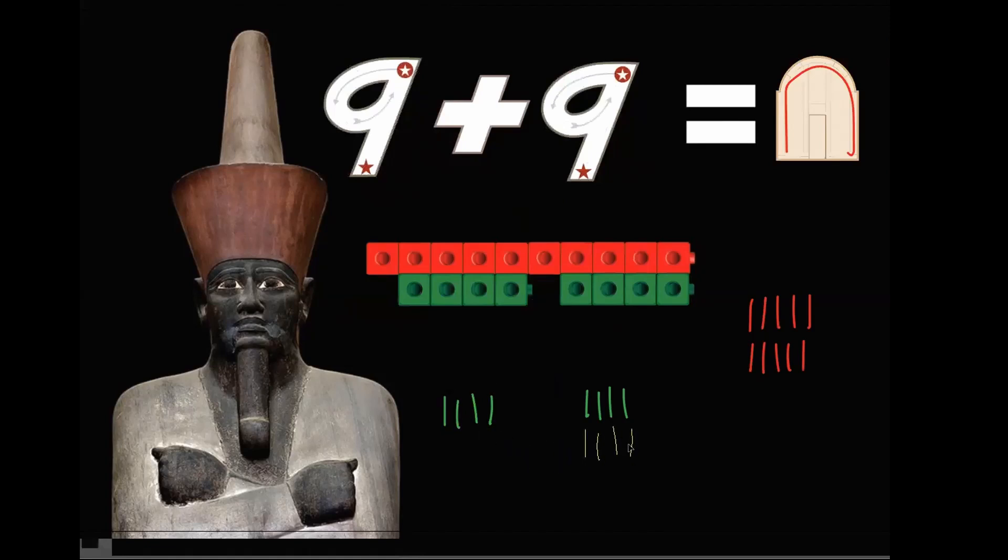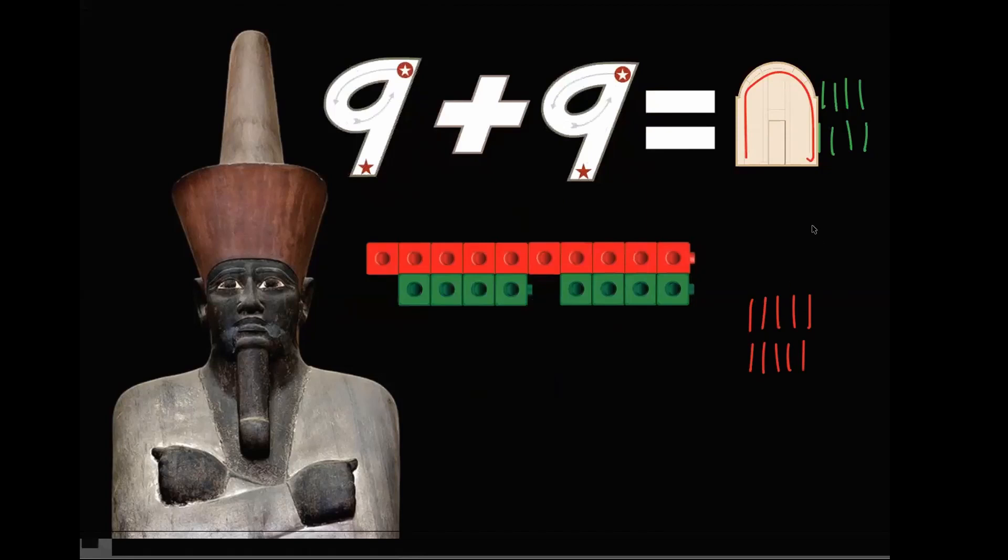So there's that ten. Now how many units do we have left? We have eight of the green. Excellent. That is correct. Five put together with five is ten. Very good. So we're going to group that ten into a house of ten. And then we have how many green counting toys? Eight. Eight. Very good.